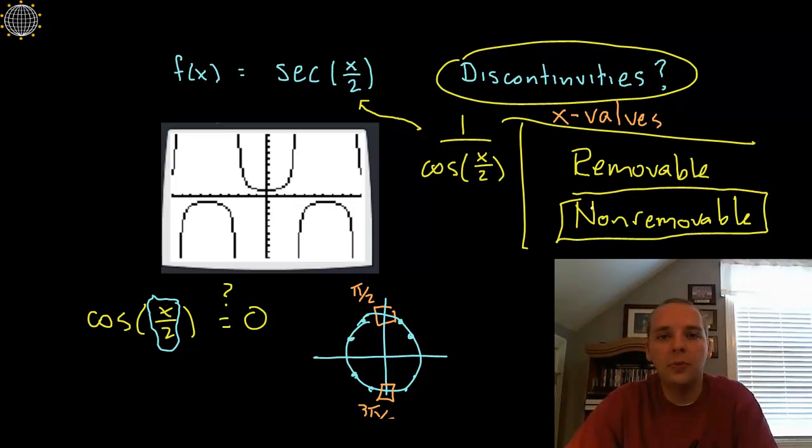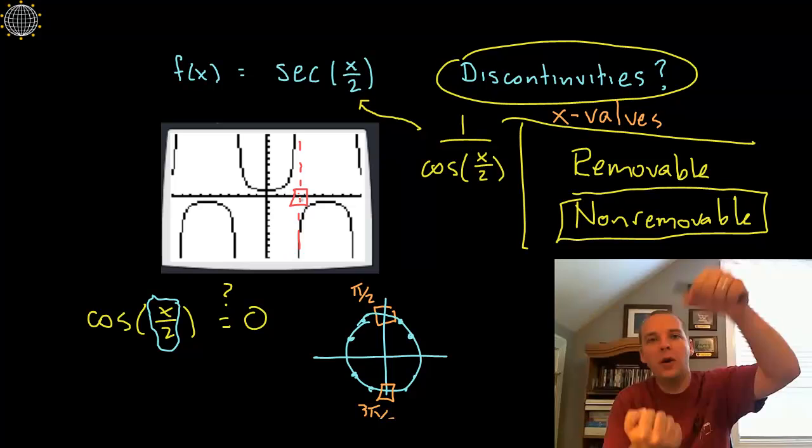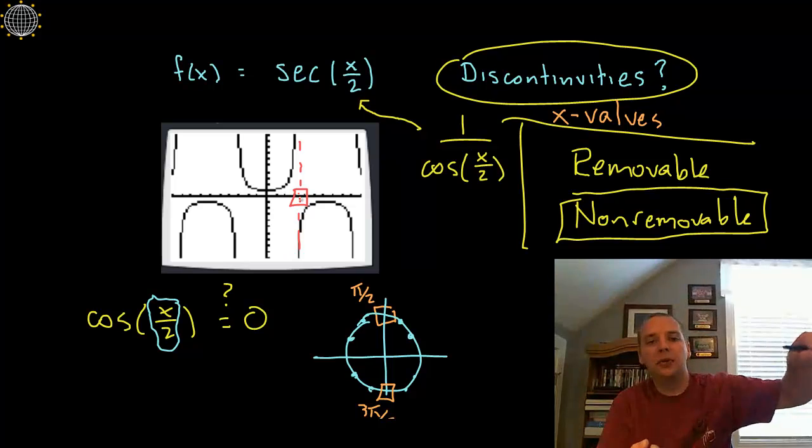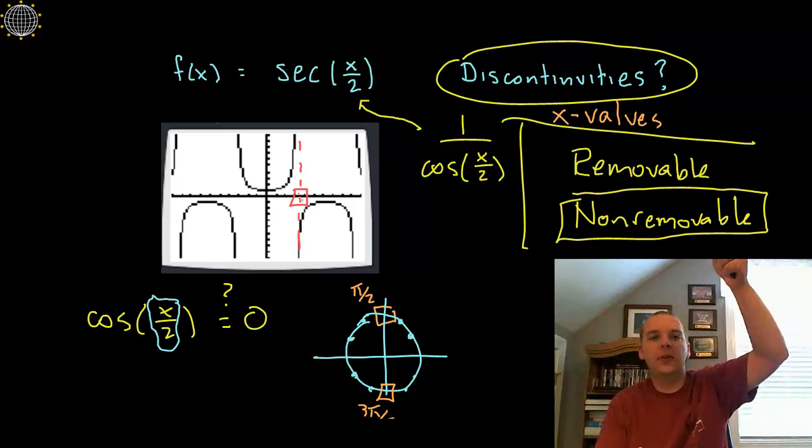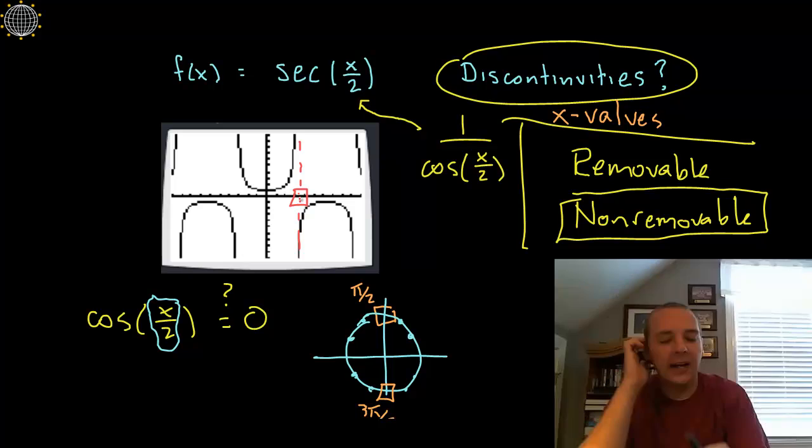Because just look at it—let's look at this discontinuity right here. If you could redefine the y-value right here, there's no way you could pull that portion of the graph that's tending towards infinity together to make it connect with the part that's going to negative infinity. They're just going too far apart.